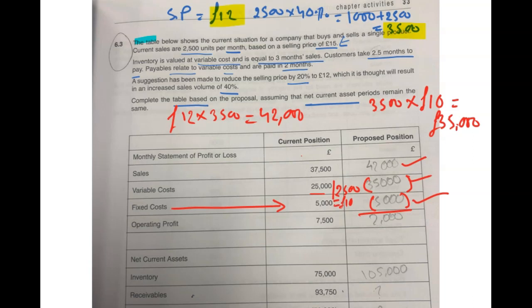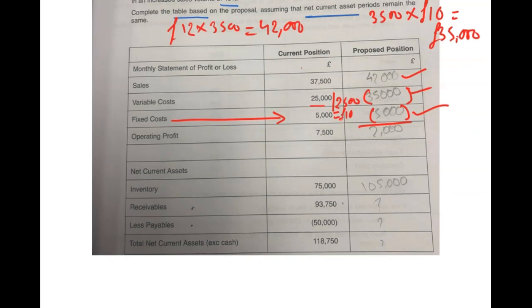The second part is about net current assets. Over here you're meant to find out your inventory, closing inventory, receivables and payables. She already found one of the answers so we'll check whether it is correct or not. Based on the current position, we need to go to the proposed position.